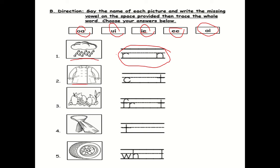Second is 'coat'. What vowel do you think is missing? Next we have 'fruit'. Now what vowel is missing in the word fruit? Next we have 'tie'. Now what do you think is the missing vowel in the word tie?